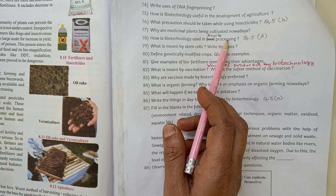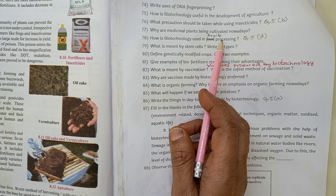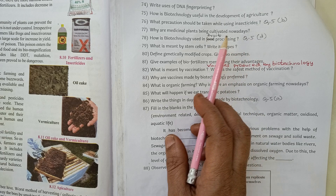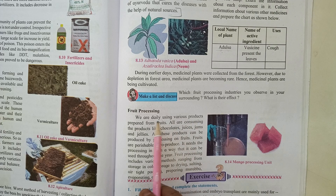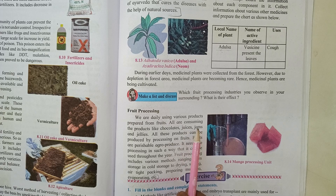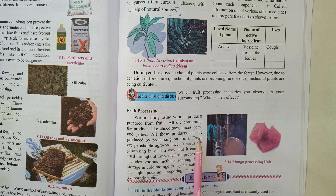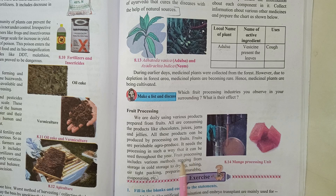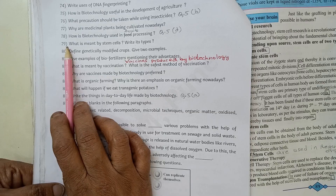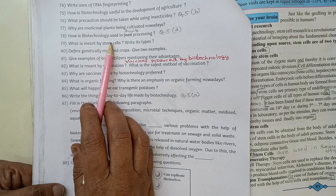Question 78: How is biotechnology used in fruit processing? This is the same as Question 5D at the end of the lesson. The answer is on page 99. We daily use various products prepared from fruits — chocolates, juices, jams, and jellies. Fruits are perishable agro-products that need processing so they can be used throughout the year. Fruit processing includes methods ranging from storage in cold storage to drying, salting, airtight packing, preparing murabba, and evaporating.